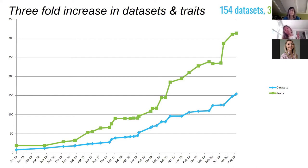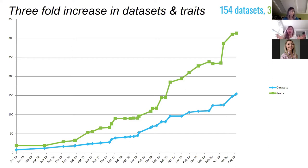What you're also noticing, if you see that divergence, is we're getting more rich traits for the datasets we have, which is really cool because it allows you to mine those datasets. We're also increasing our diversity in the datasets and the ancestries we're representing. As we bring in larger scale UK Biobank cohorts and TOPMed type results into the portal, it will really increase the diversity of datasets and traits going forward.